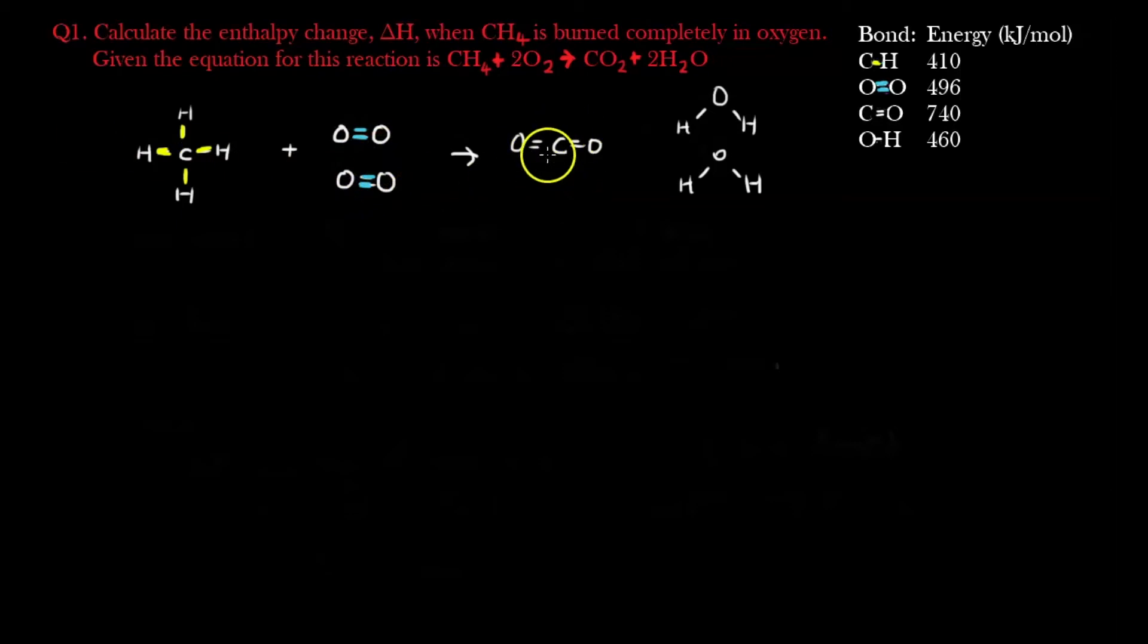Whereas for C double bond O, to break one C double bond O, it's 740 kJ per mole required. So this is 740, this is another 740, so take note there are two bonds to form here. Sorry, this is reactants, is bond breaking, right? I have to break all these bonds.